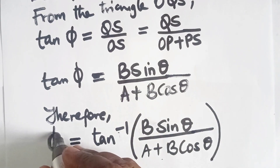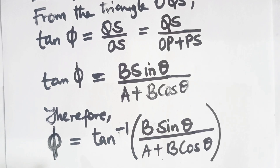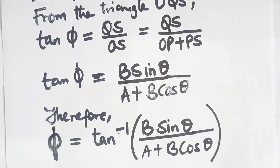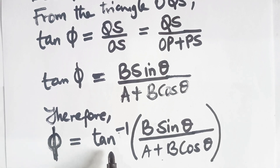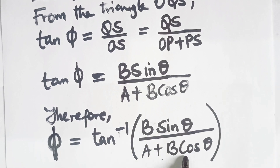So phi gives the direction of the resultant vector. If we want to find the direction of the resultant vector, we use phi equal to arctan of B sin theta over A plus B cos theta.